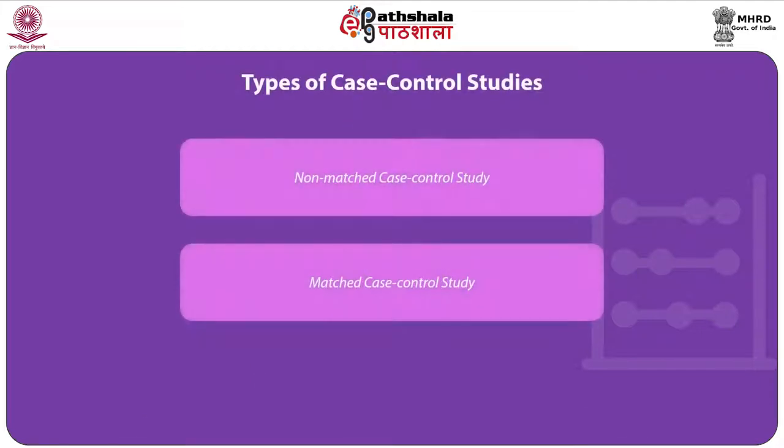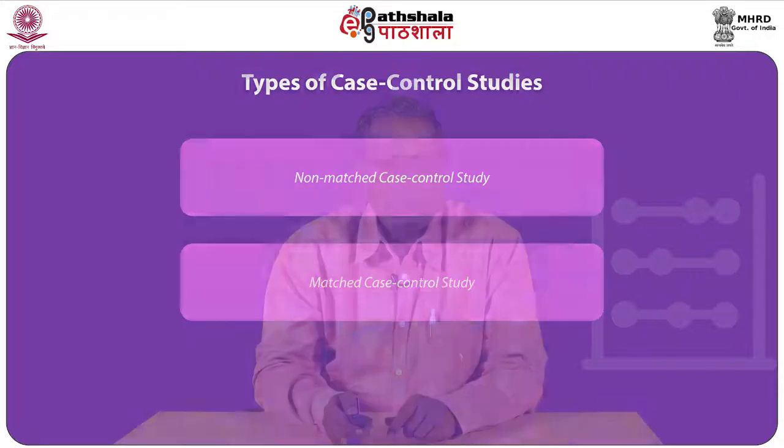We will now move on to the types of case control studies. Based on the selection of controls, there are two types: non-matched and matched case control studies. In a non-matched case control study, which is the simplest form, a person with the disease is enrolled and a person without the disease is also enrolled as a control, and their exposure status is determined.